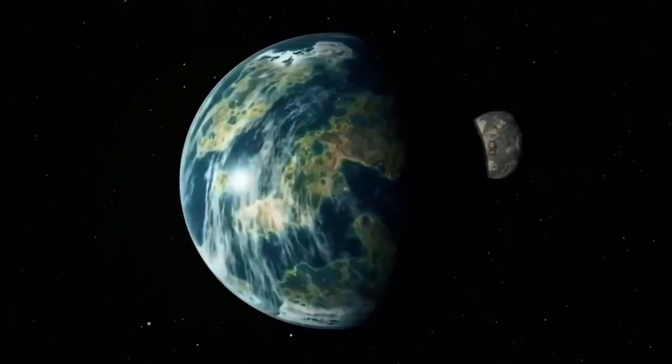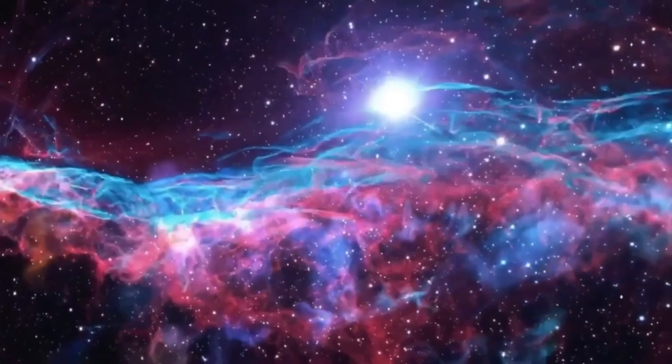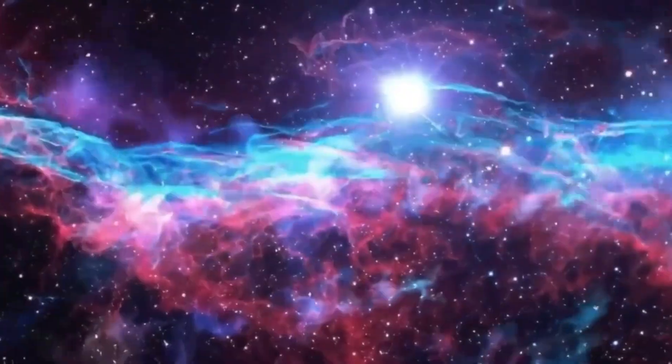The James Webb Telescope has recently revealed the clearest image of Proxima Centauri in history, showing astonishing details of Proxima b, a potentially habitable exoplanet.